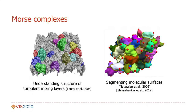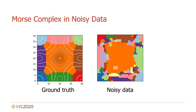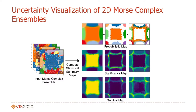Morse complexes have shown great utility in understanding the topology of complex scientific datasets. However, noise in the scalar field can significantly distort the Morse complex topology. We study the extraction of Morse complexes for ensembles of noisy scalar fields through their uncertainty visualization using our proposed statistical summary maps.